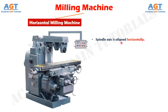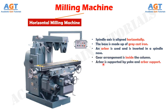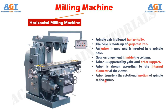On the other hand, in a horizontal milling machine, the spindle axis is aligned horizontally. The base is made up of grey cast iron. In this machine, an arbor is used and it is inserted in a spindle nose. The gear arrangement is inside the column. Above the column, we have the overarm. An arbor is supported by yoke and arbor support, and is chosen according to the internal diameter of the cutter. Arbor and spindle are different — the arbor is an extension fitted inside the spindle and transfers the rotational motion of the spindle to the cutter. This type of machine gives excellent finishing and cutting chips are removed easily.